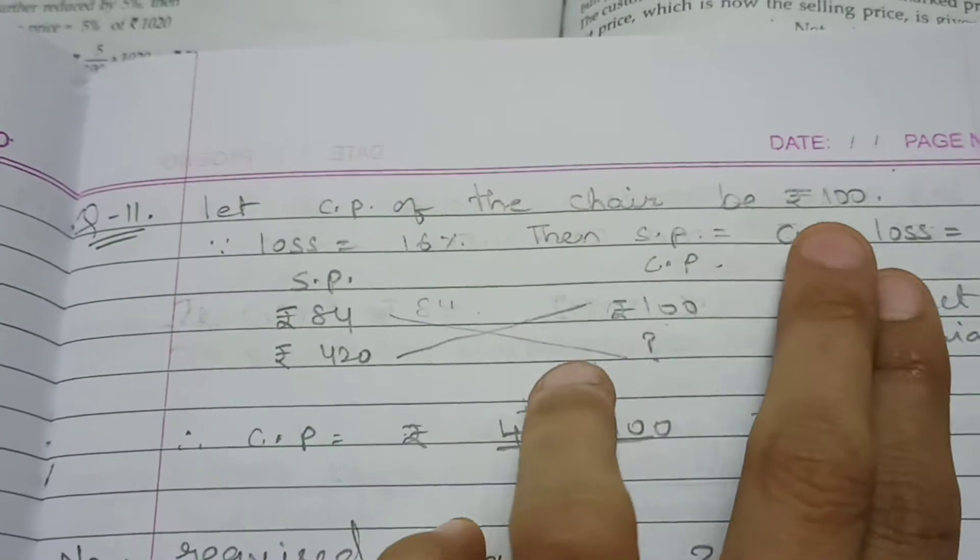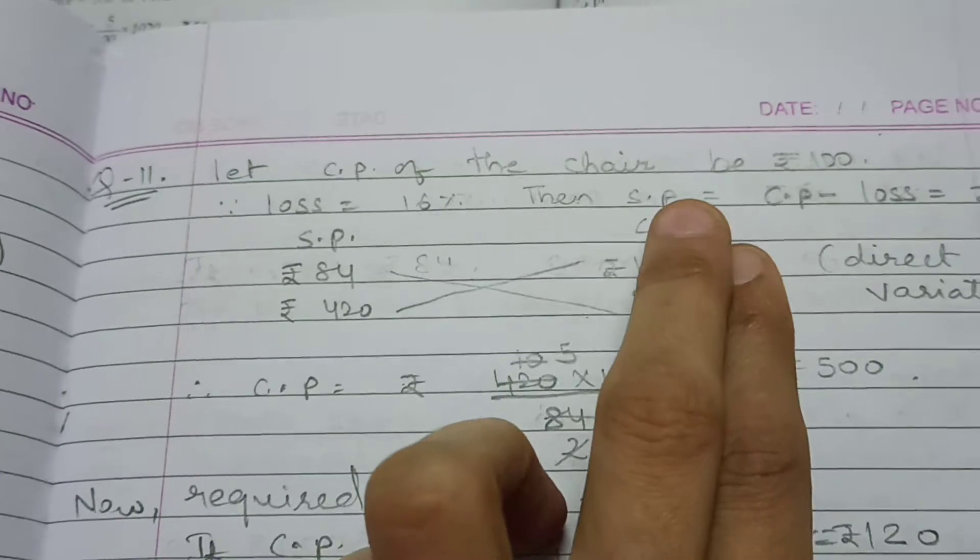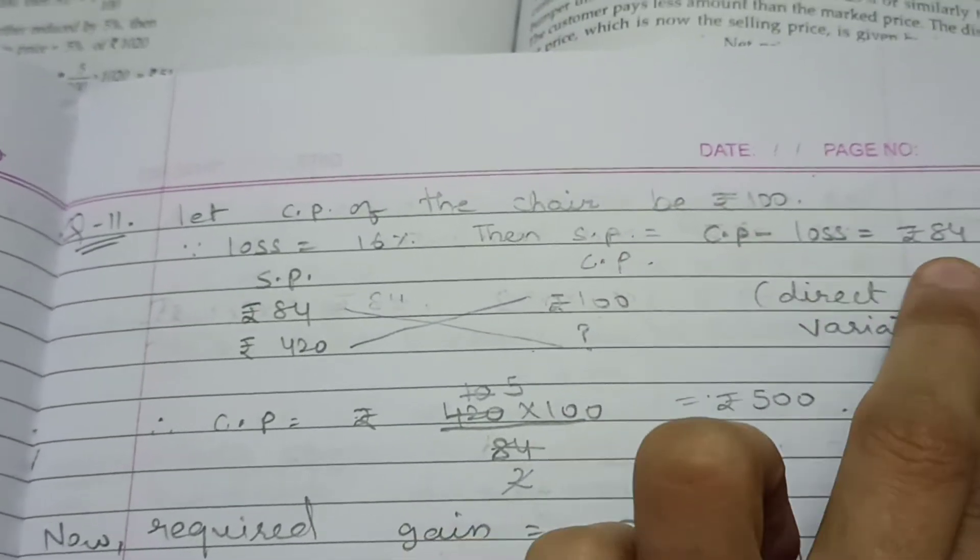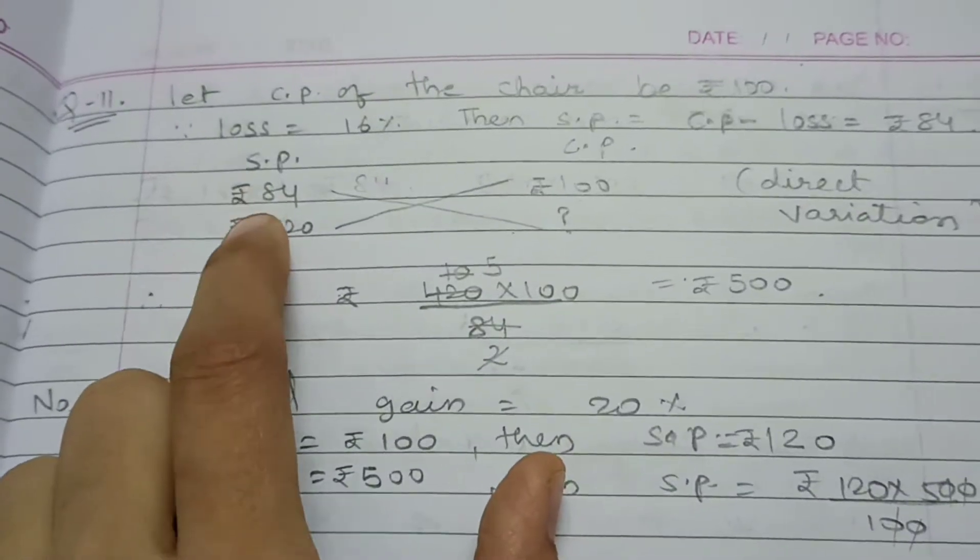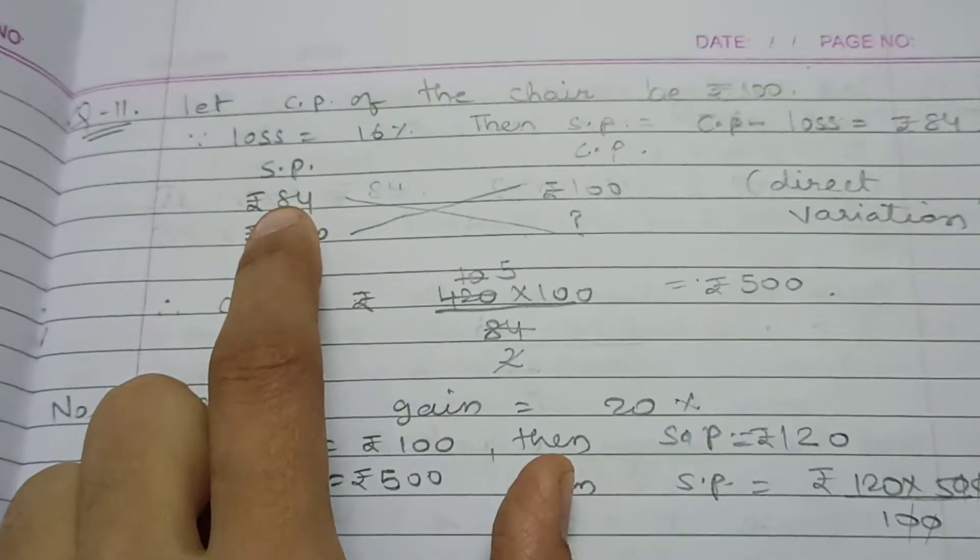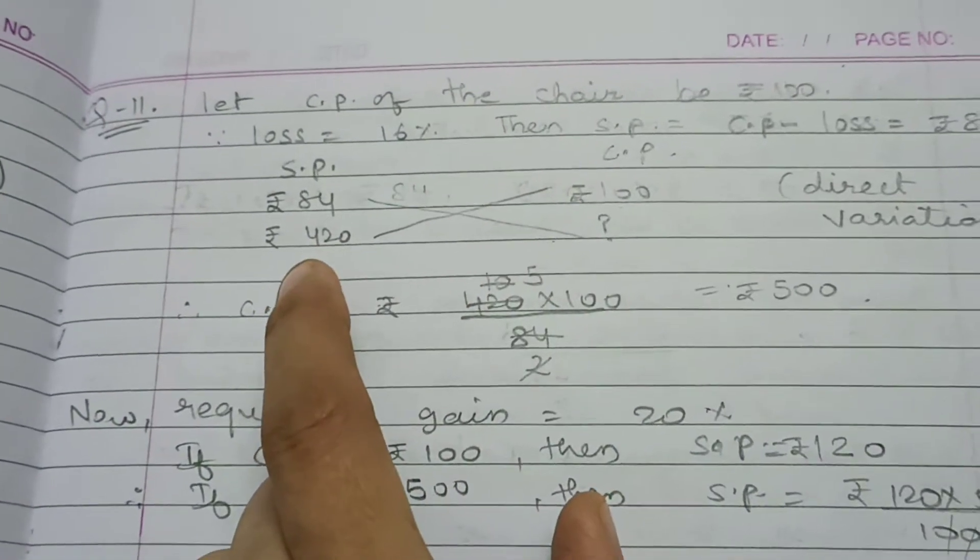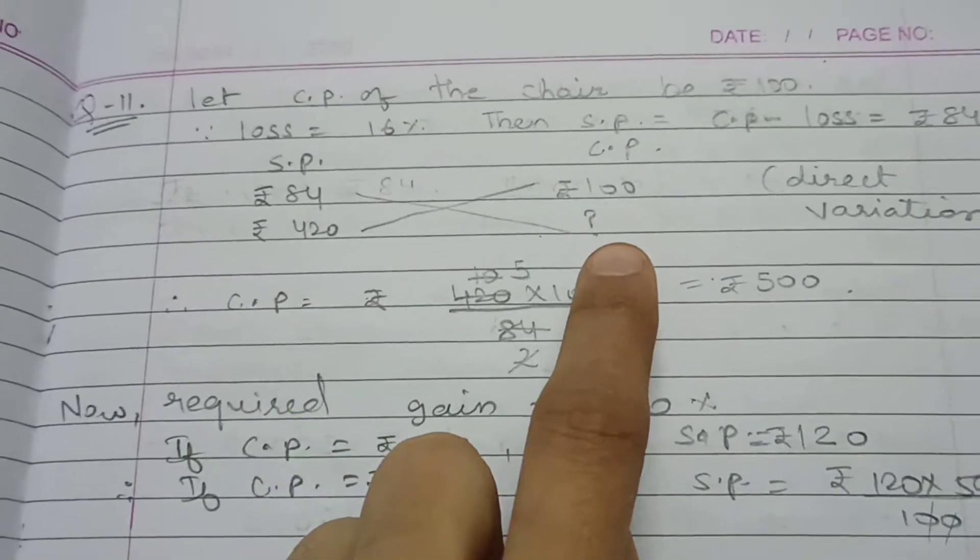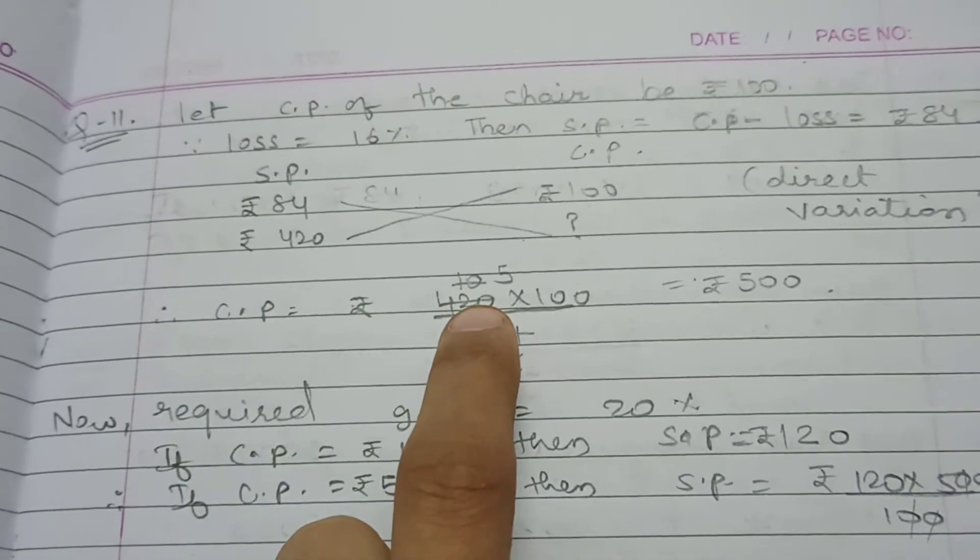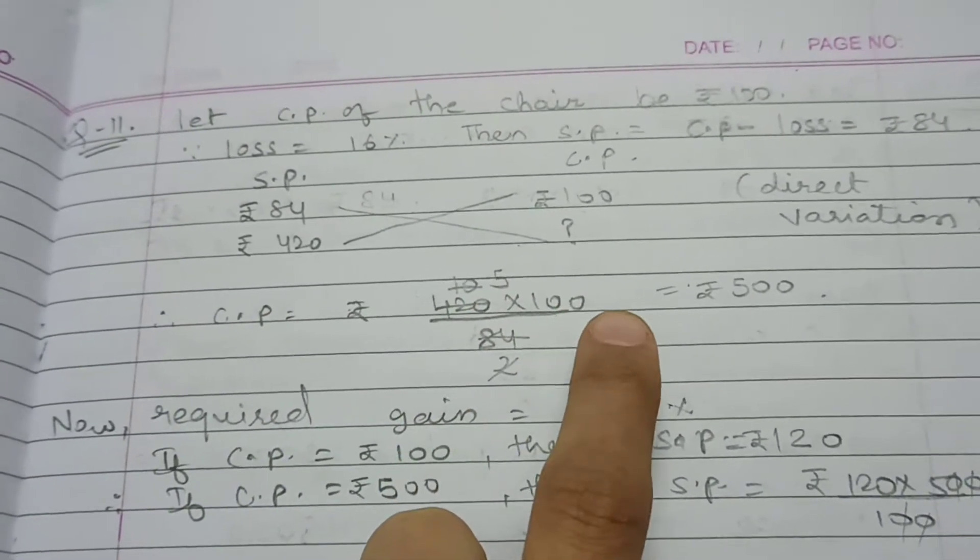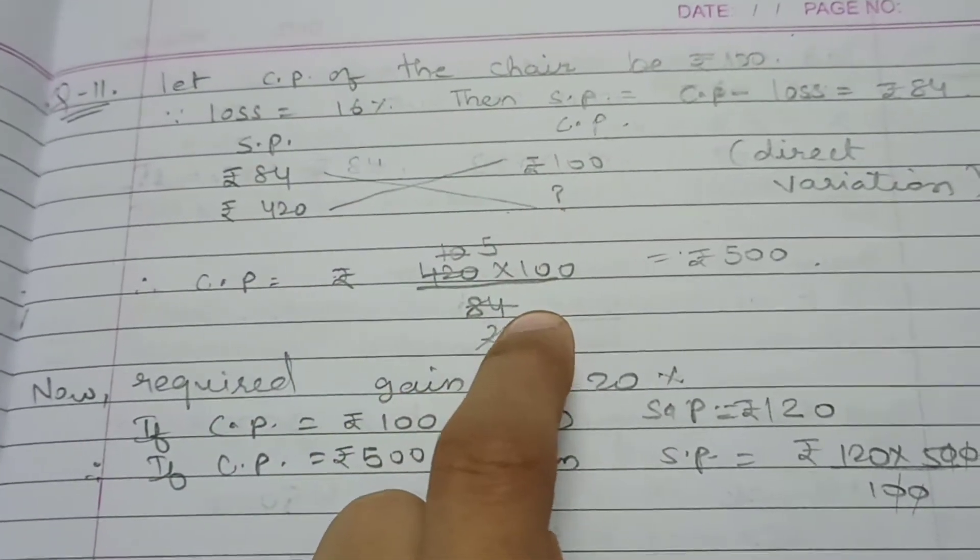Let the cost price of chair be Rs. 100. Since loss is 16%, then SP will be CP minus loss, Rs. 84. So, if SP is 84, then CP is 100. If SP is 420, then CP will be? We need to find this, right?